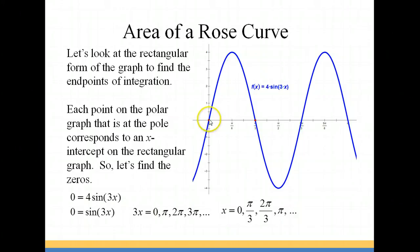Looking at our graph, you can see that we have zeros at zero, pi over 3, 2 pi over 3, and pi. And of course, it would continue on.